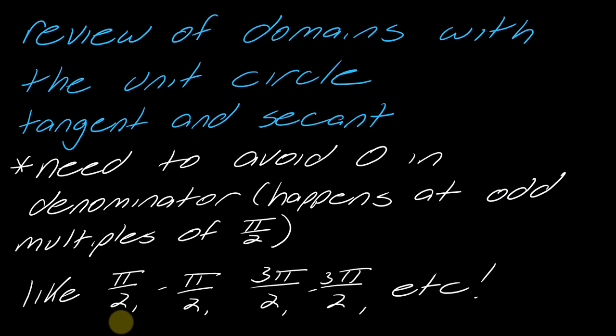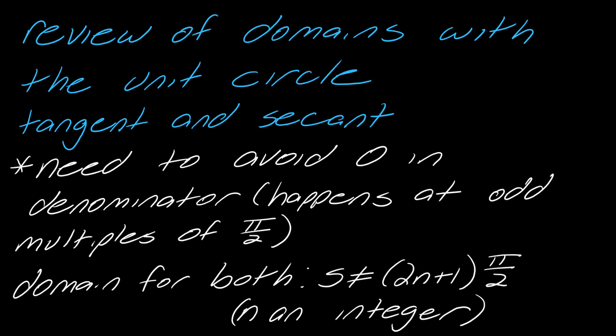odd multiples of pi over two. Odd multiples of pi over two would be like pi over two, or negative pi over two, or three pi over two, or negative three pi over two, and so on and so forth. So, this is how we want to think of our domain now, which is a little bit simpler with the unit circle.